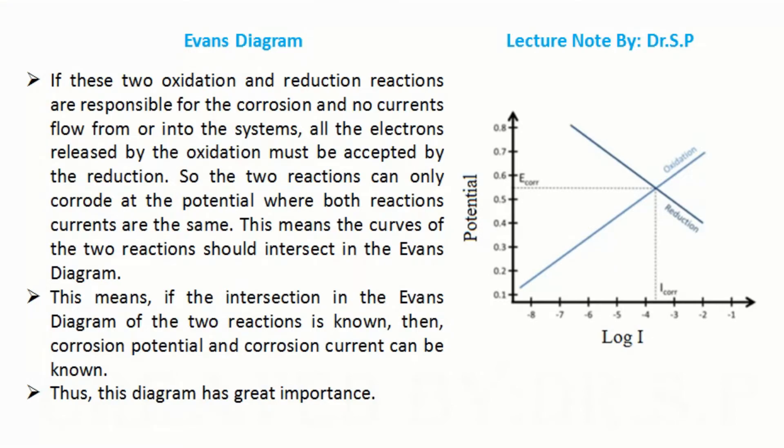This means if the intersection in the Evans diagram of the two reactions is known, then corrosion potential and corrosion current can be known. Thus, this diagram has great importance.